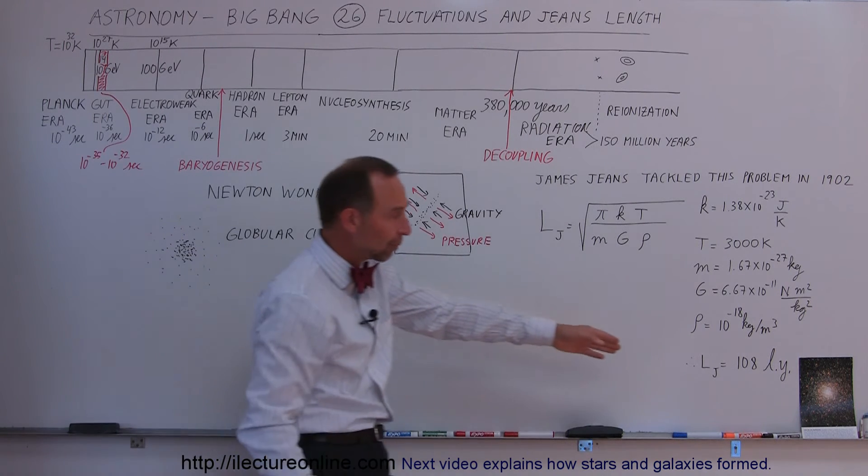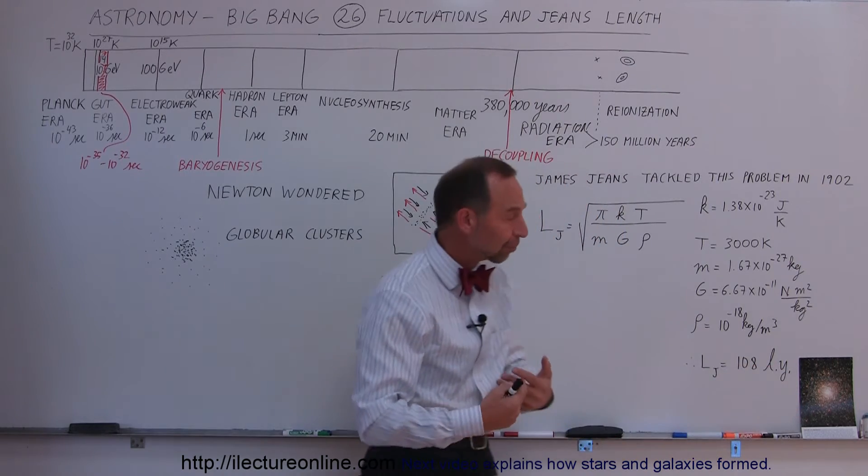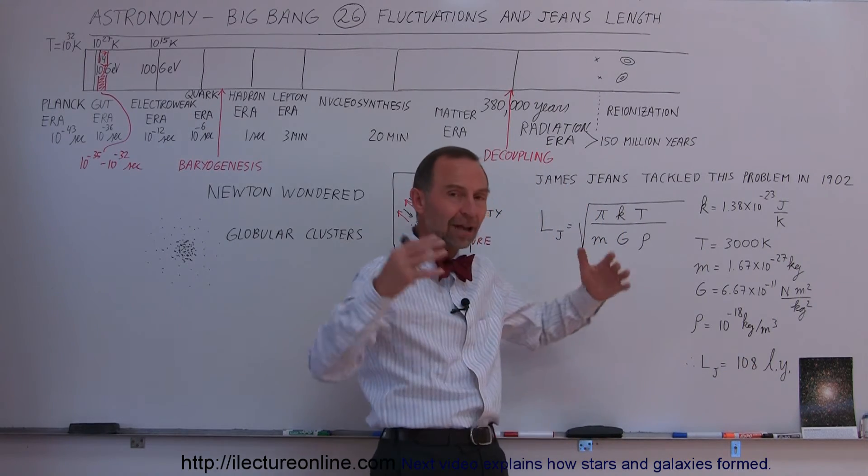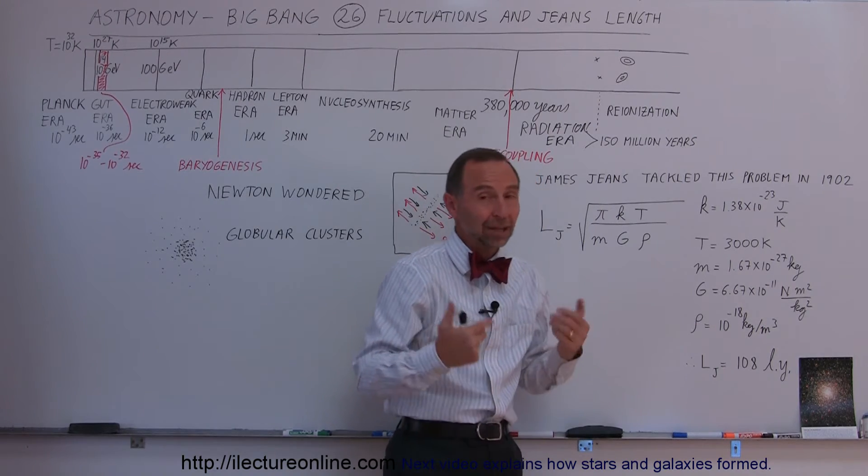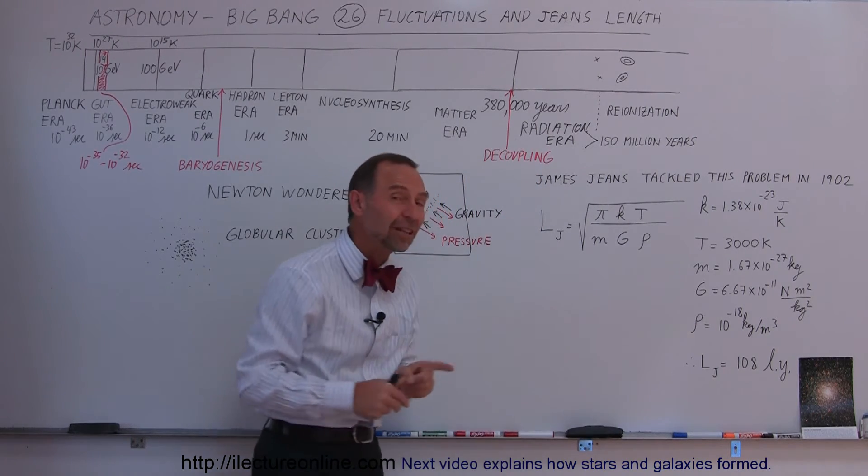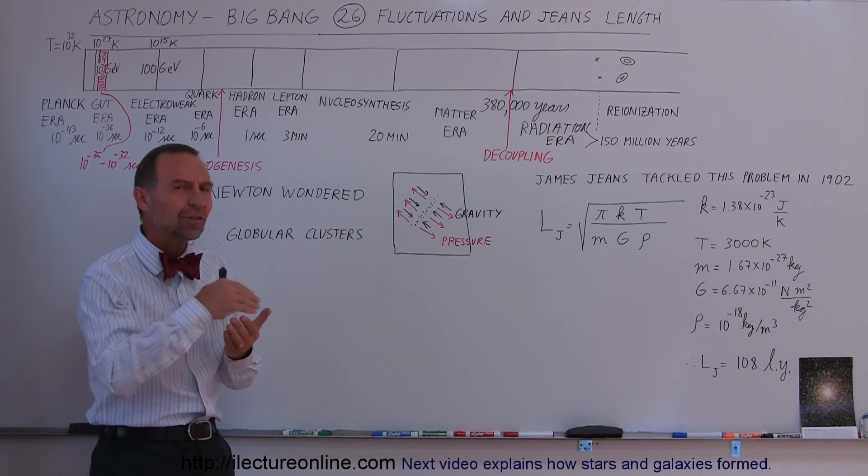And it turns out that the typical size of a globular cluster is about 60 to 100 light years across. Here's a nice little picture of what a globular cluster looks like. They're absolutely phenomenal inside if you can imagine a million stars clustered together very densely like that. In our galaxy there's about 150 of these clusters.